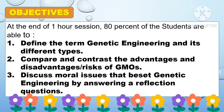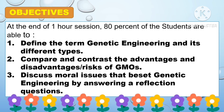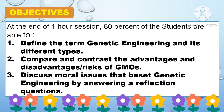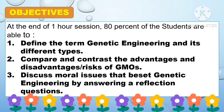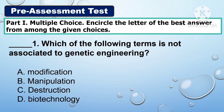For the objectives, at the end of one-hour session, 80% of the students are able to: first, define the term genetic engineering and its different types; second, compare and contrast the advantages and disadvantages of GMOs; and third, discuss moral issues that beset genetic engineering by answering reflection questions.